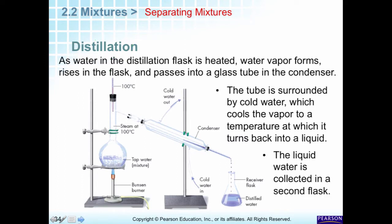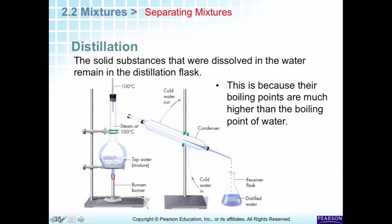Solids will stay behind during distillation. If the mixture contains multiple liquids, they have different boiling points. Liquids with lower boiling points come over first; those with higher boiling points come later. The thermometer tells us if something condenses before 100°C, indicating a component with a lower boiling point is mixed with the water. So distillation works with liquid mixtures too.